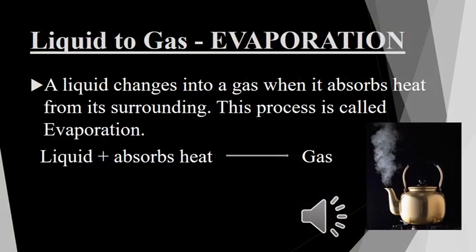The next process is evaporation. A liquid changes into a gas when it absorbs heat from its surroundings. This process is called evaporation. The equation explains that when a liquid absorbs heat, it changes into a gas. The picture shows the process of evaporation, where water is converted into steam on heating.